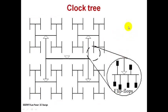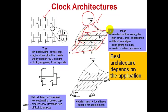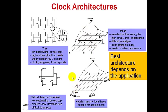Other clock architectures include the mesh structure, where the clock source distributes in a mesh-like form to different areas across the chip. There is also a hybrid architecture combining a mesh with local tree-like structures, creating a tree structure with cross-links to provide balancing of clock paths.